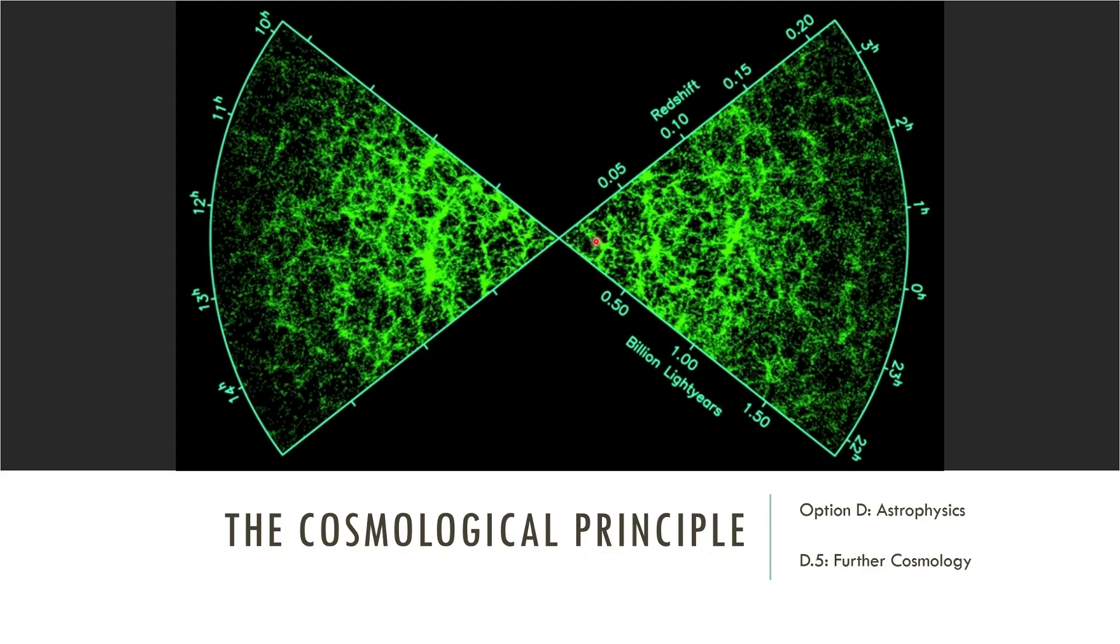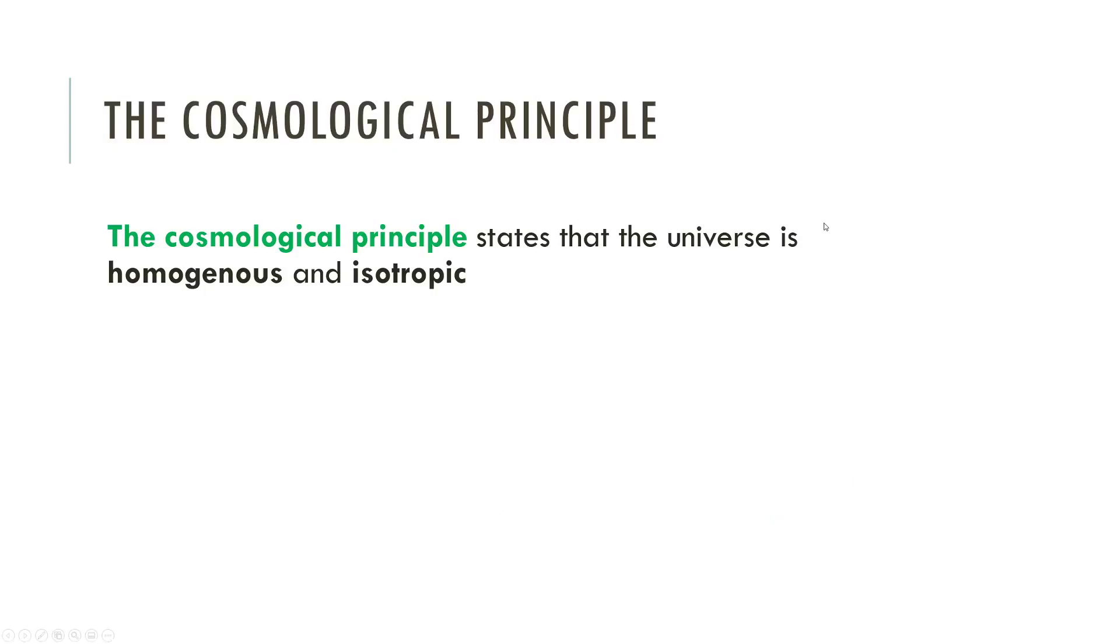Looking at the picture here, you can see this is the basic idea. If we look off in any direction from where we are, no matter which way we look, we see pretty much the same thing everywhere. That's the cosmological principle. It states that the universe is homogenous and isotropic. The first one, homogenous, means the same throughout. At any location, the universe looks the same to any observer at any point.